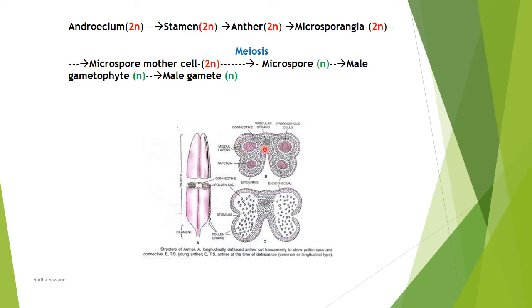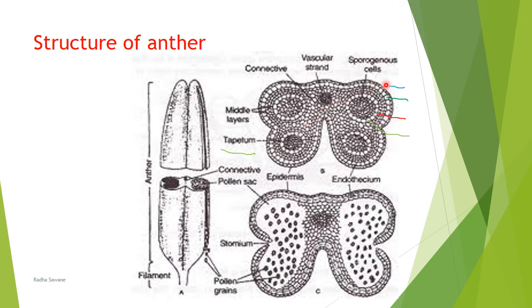This is a transverse section of a dithecous anther, showing two very clear lobes. It contains four pollen sacs. We are going to study the anther wall first. The outermost layer is called epidermis — it is a common wall layer surrounding the entire anther. The cells are small, barrel-shaped, closely packed, and thin-walled, and though it is the outermost layer, it is protective in nature.